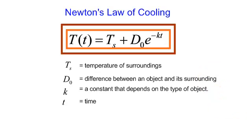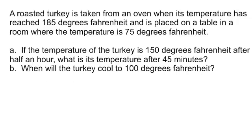Let's do a problem. A roasted turkey is taken from an oven when its temperature has reached 185 degrees Fahrenheit and it's placed on a table in a room where the temperature is 75 degrees Fahrenheit.